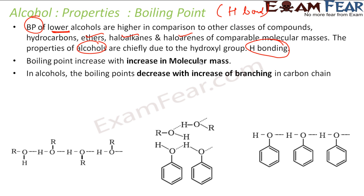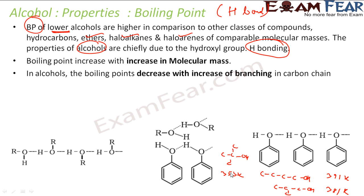The boiling point also decreases with an increase in branching. For example, butanol has a boiling point of 391 K; with one branching it becomes 381 K; with more branching it is 353 K — all in Kelvin. So the boiling point decreases with branching because when you increase branching, you decrease hydrogen bonding, and thus the boiling point decreases.